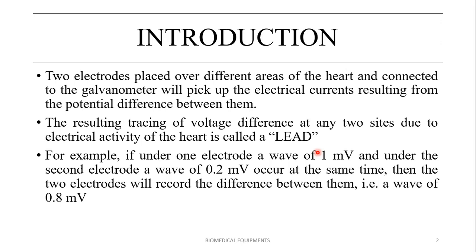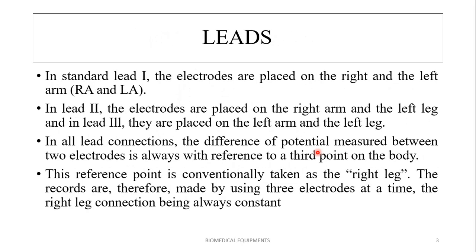For example, if under one electrode a wave of 1 millivolt and under the second electrode a wave of 0.2 millivolts occurred at the same time, then the two electrodes will record the difference between them. The recording is the difference between the two electrodes — that is, 1 minus 0.2, which equals 0.8 millivolts. This is how the lead works: it records the electrical difference between two electrodes.